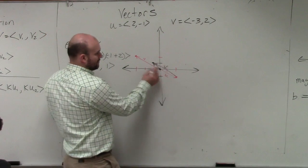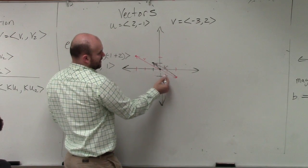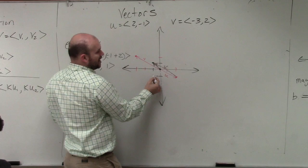Well, because look at what's v. Remember, v is what? Negative 3, 2. 1, 2, 3, up 2.